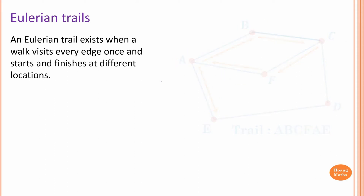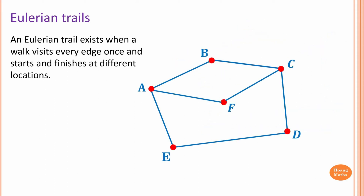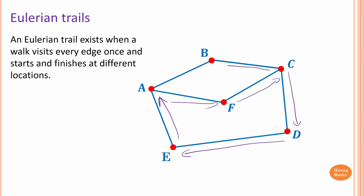Let's focus on Eulerian trails. For example, I can start at C, I go to D, and from D I travel to E. And then E, I go to A. So from A, I go to F, and then from F to C, and from C to B, and B to A. This is an Eulerian trail.